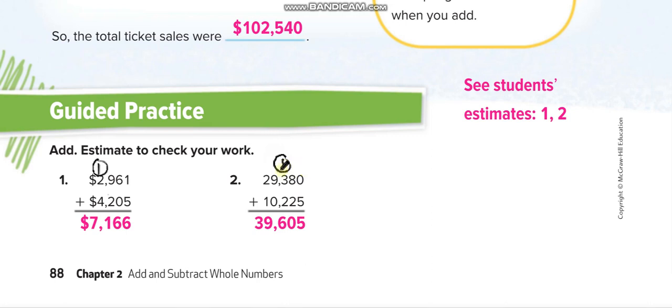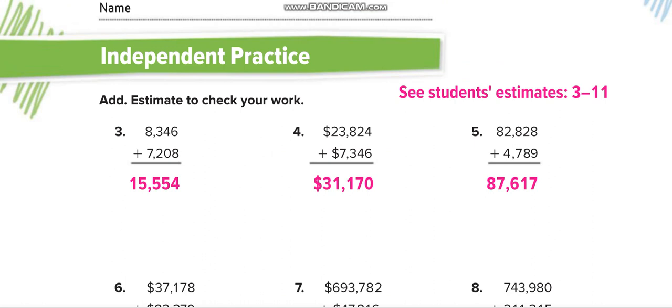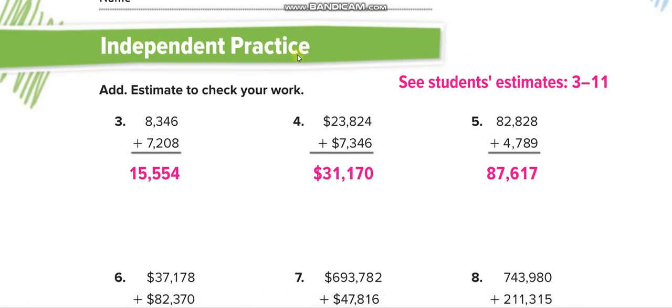0 and 5 is 5. 8 and 2 is 10. 0 here, one up above the 3. 1 and 3 is 4, 4 and 2 is 6. 9 and 0 is 9, and 2 and 1 is 3. I hope you guys understand. It's a very simple lesson.